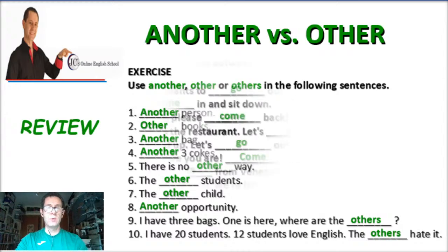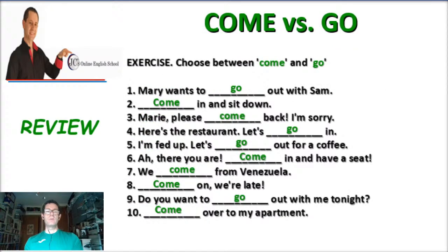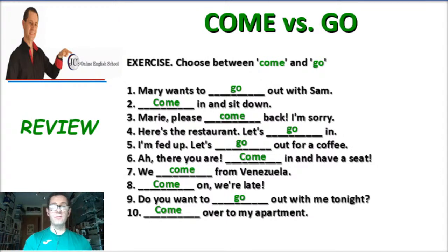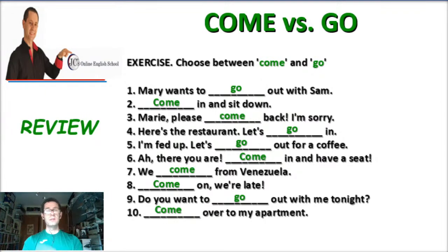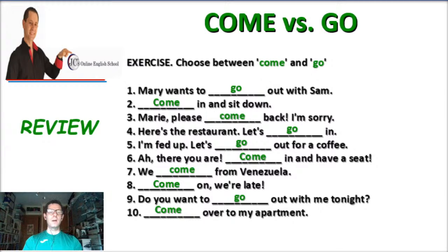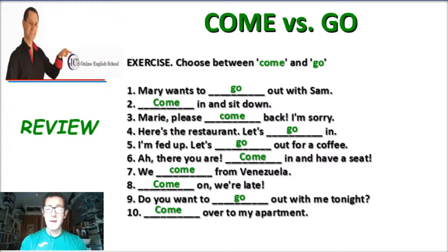Now, come and go — this is one of the last topics we did. Remember, "come" is an irregular verb: come, came, come. "Go" is also irregular: go, went, gone. Example one: "Mary wants to go out with Sam" — congratulations Sam, because Mary is pretty. Example two: "Come in and sit down."